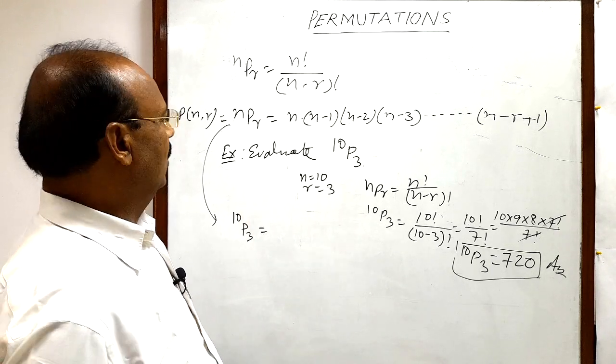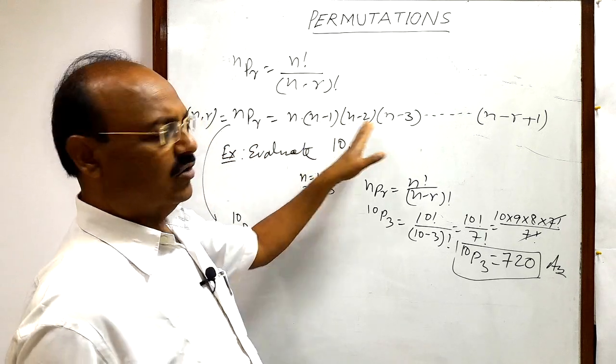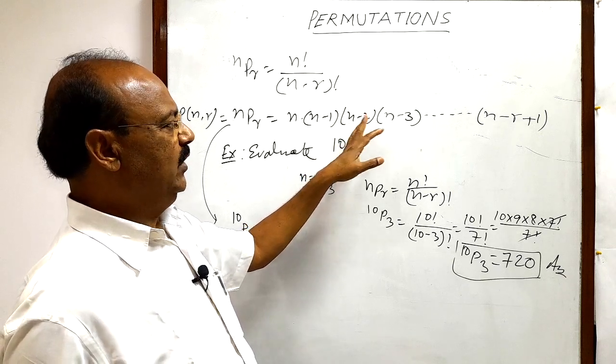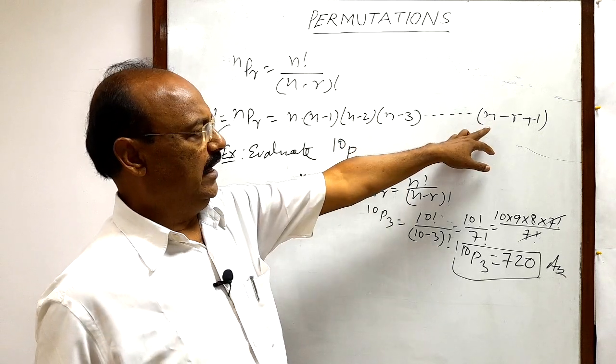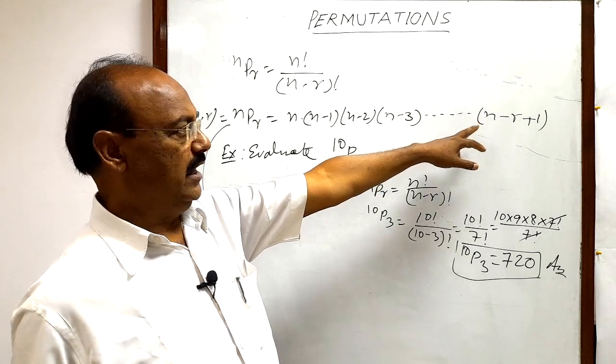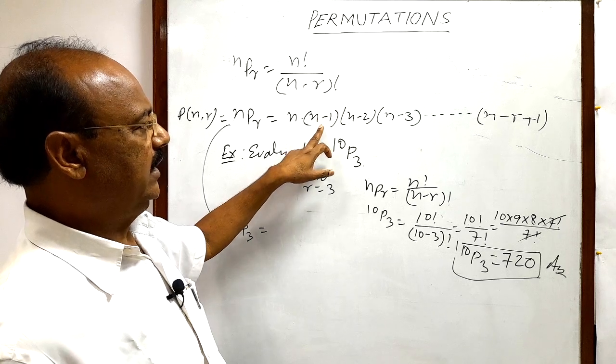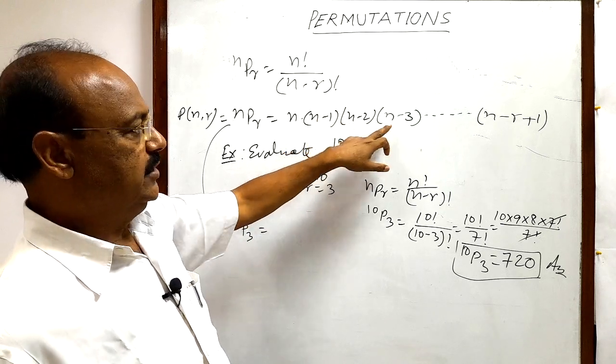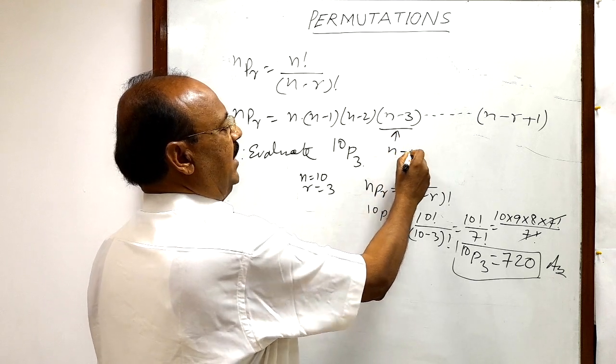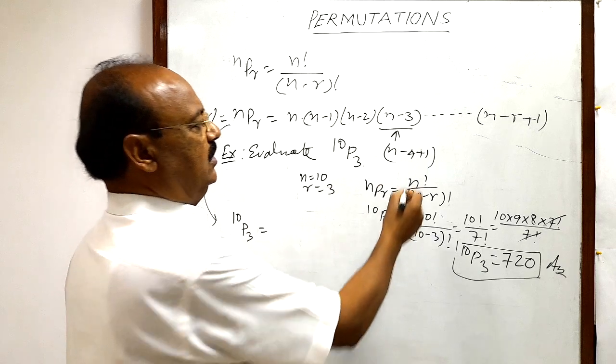Here you must remember that we are starting in descending order here: N, N minus 1, N minus 2, up to how many factors? R factors. Not N minus R plus 1 factor, but R factors. Because this is the first factor, this is the second factor, this is the third factor, this is the fourth factor. So this fourth factor is nothing but N minus 4 plus 1.